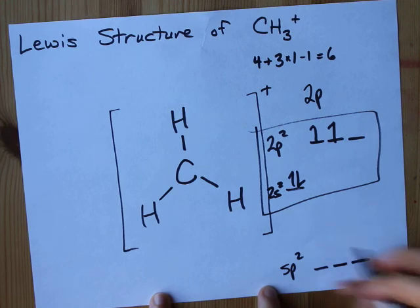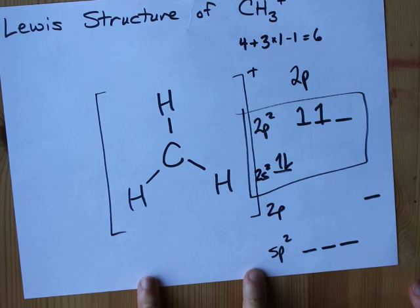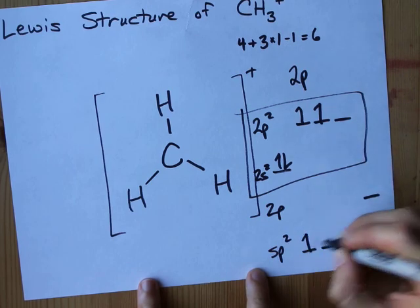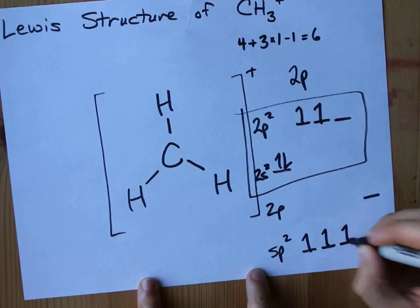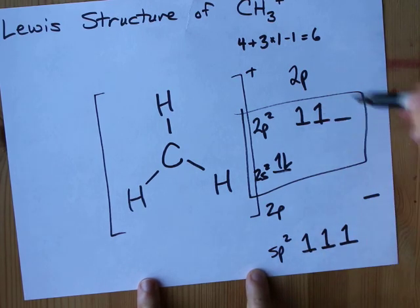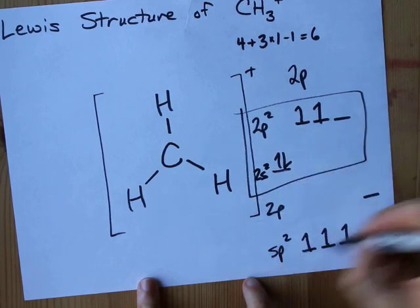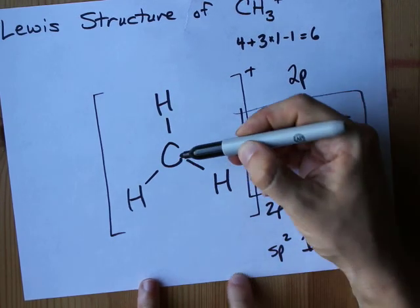1, 2, 3, 2p, one of those left over. 1, 2, 3, 4 electrons. 1, 2, 3. Oh, and I remove an electron for the positive charge. This is the form of carbon in this case.